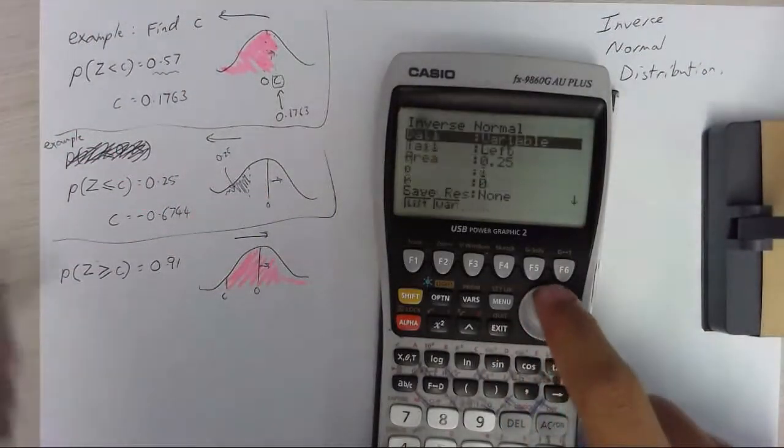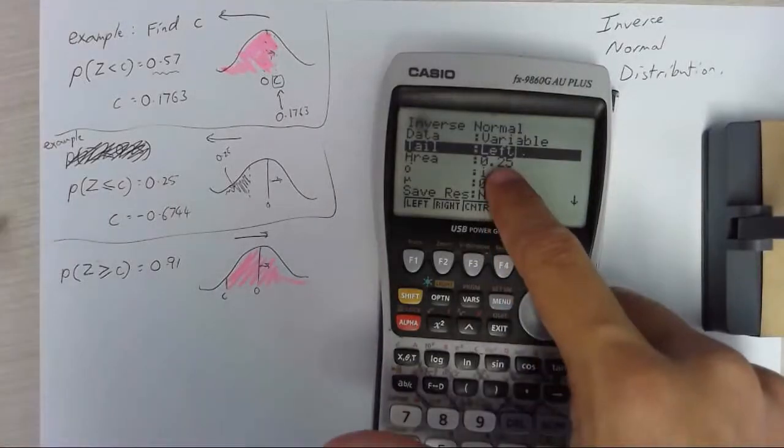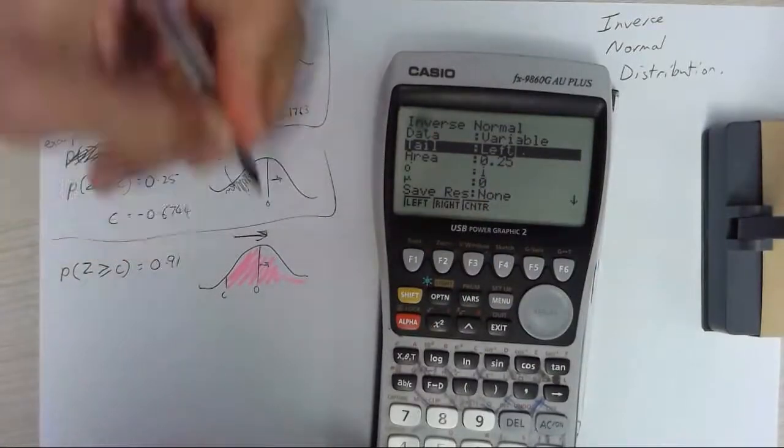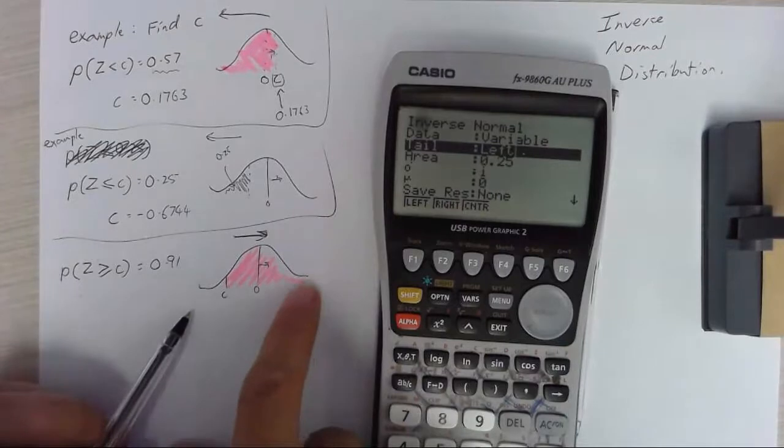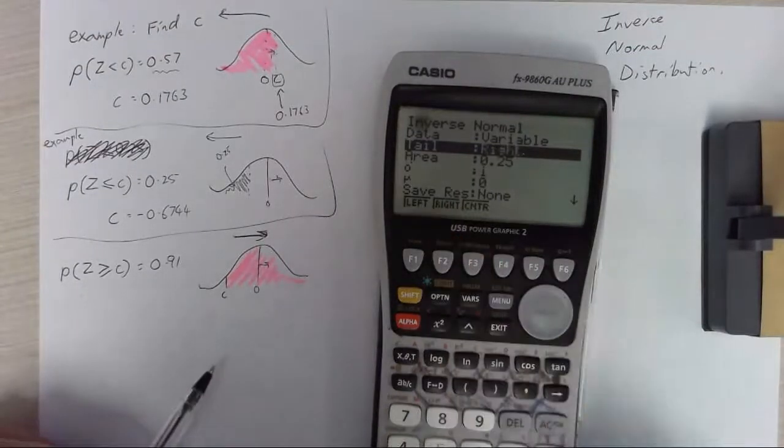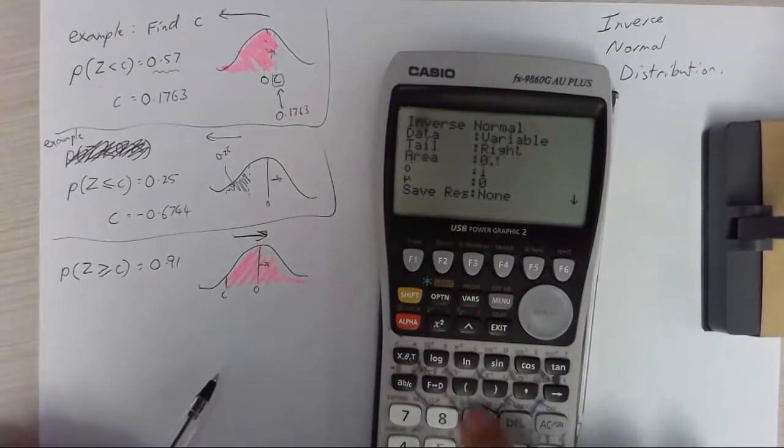So going back to inverse normal distribution. This time we're moving in that direction so we're using the right tail. So I need to change it to right tail. Area of 0.91,